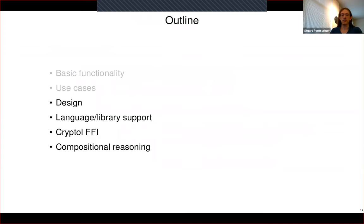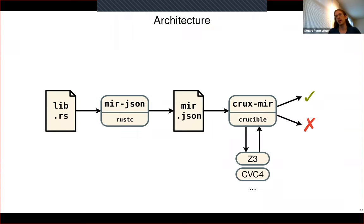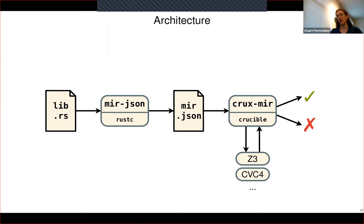In terms of the general architecture, the tool is set up in two pieces. The first piece is mir-json, a Rust program that links against rustc as a library. It consumes your Rust source code — actually all crates in your dependency graph when you run cargo crux-test — and outputs the MIR for each crate in a custom JSON format. This JSON is then consumed by the back-end crux-mir binary, written in Haskell and linking against the Crucible symbolic execution library. This converts all your MIR code into Crucible ASTs and runs the Crucible symbolic execution engine, which builds up formulas to send to a solver. Based on what the solver says, it concludes that your post-conditions hold on all inputs, or gives you a counterexample.